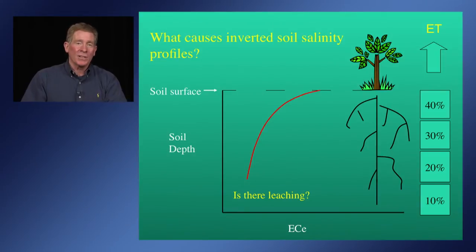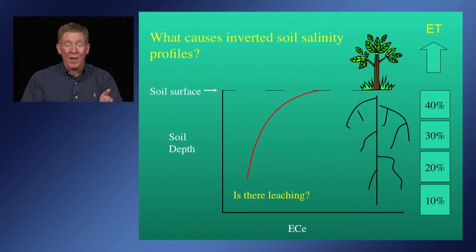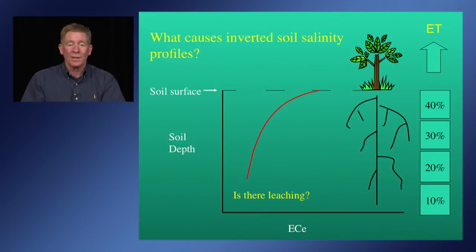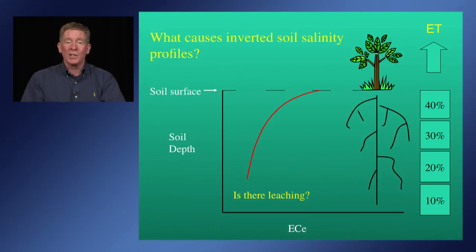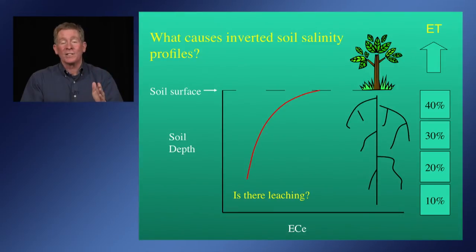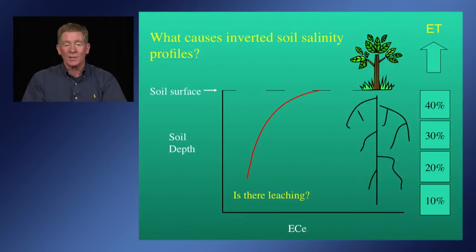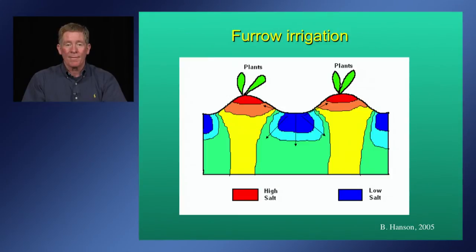Sometimes salinity profiles increase upward toward the soil surface rather than with depth. This indicates a leaching fraction of zero — no leaching occurring whatsoever. This illustrates a situation where there may be a saline shallow water table within the top few feet of the profile, such that salts move up by capillary action and concentrate at the soil surface.